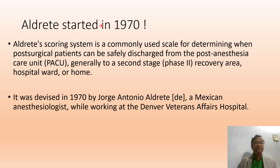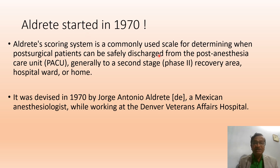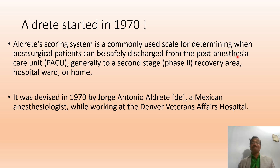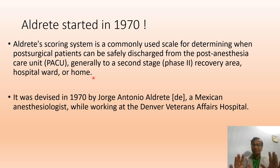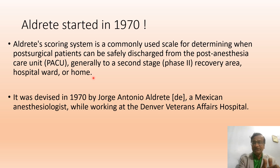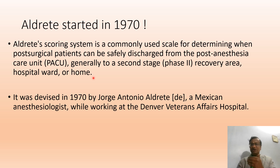The Aldrich scoring system was started in 1970. This scoring system is commonly used to determine when a post-surgical patient can be safely discharged from the post-anesthesia care unit (PACU) — secondary to a general-stage recovery area — to a ward or home. It is not about extubation; it is about transfer from the post-anesthesia care unit to the ward or home.